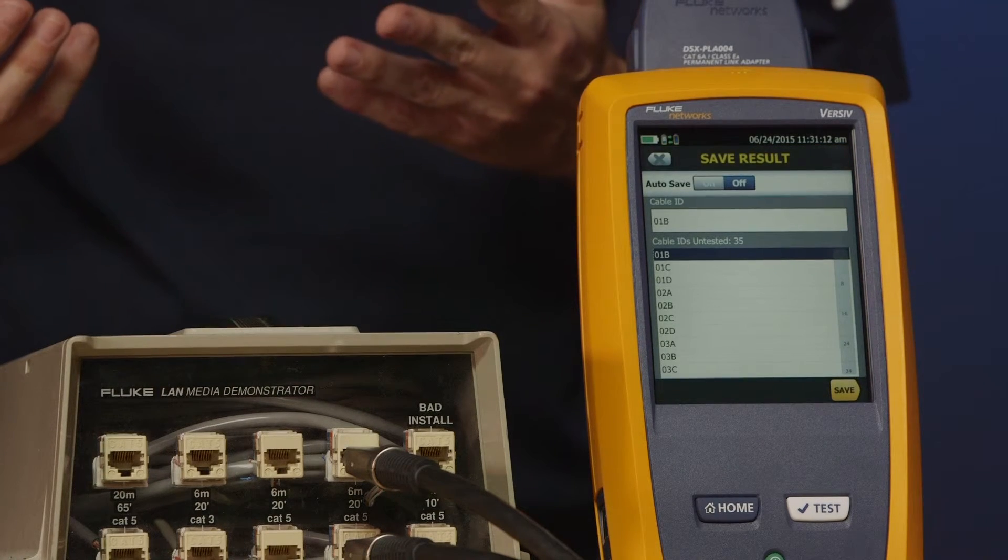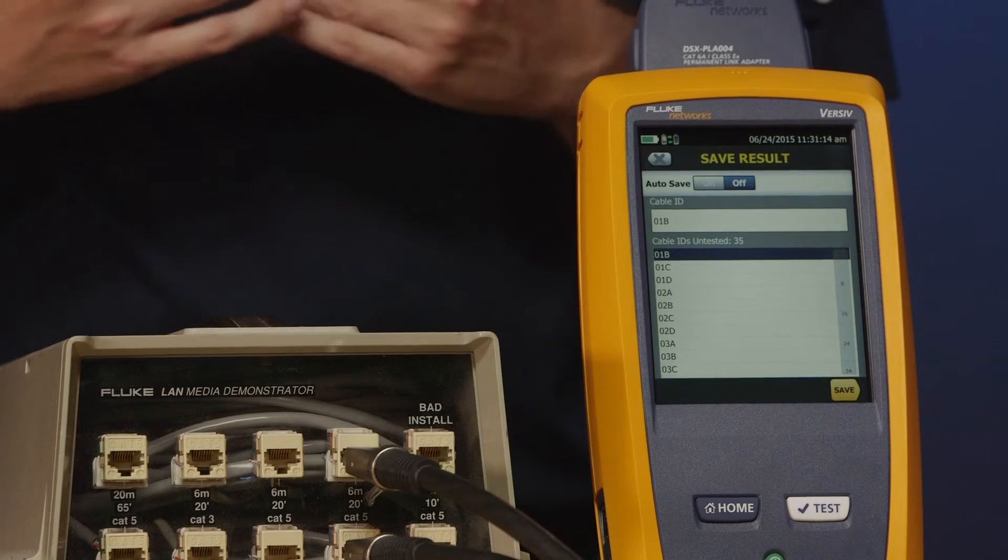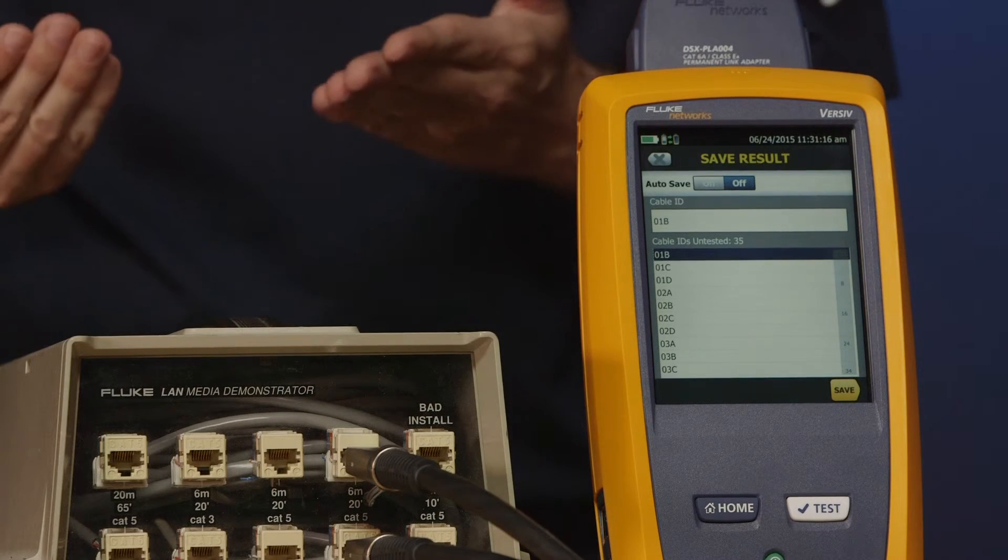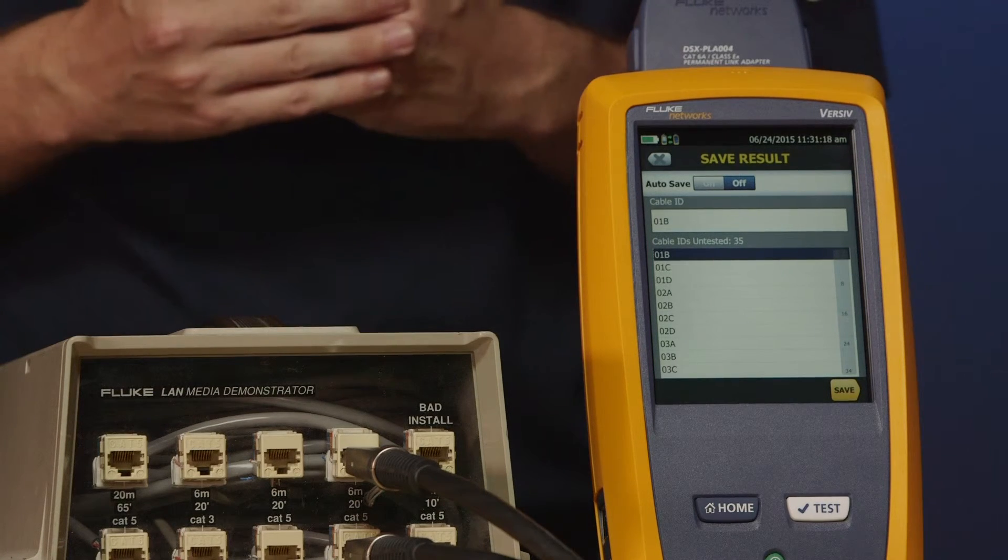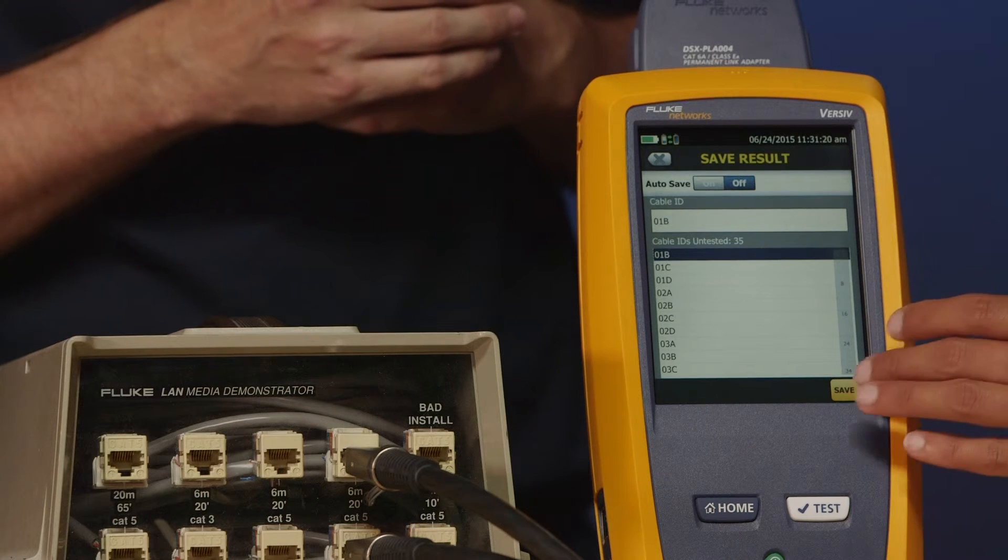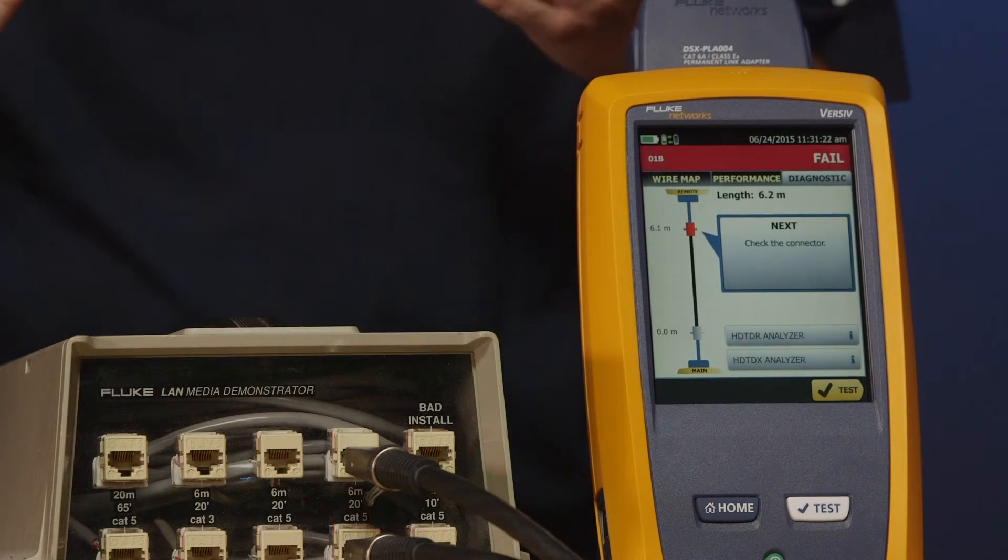That brings up our cable ID selection here. You'll notice that 01A is missing because we've already tested that. It's jumped to 01B. Let's go ahead and hit save. And you are good to go.